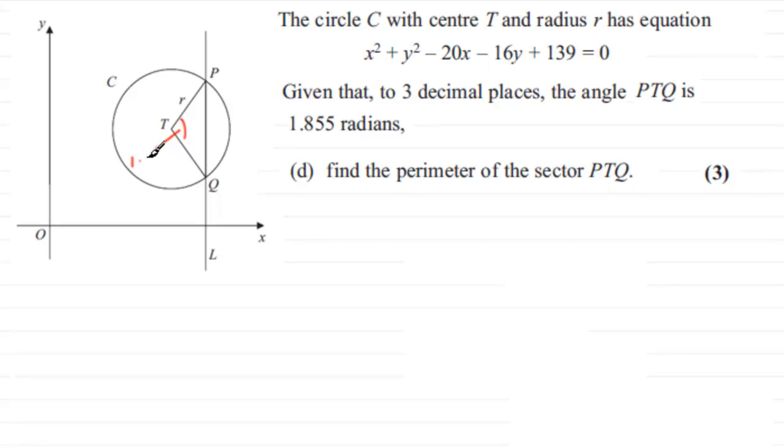We're asked to find the perimeter of the sector PTQ—that's this distance all the way around here. In the previous part of the question we found out that the radius was 5 units. If you'd like to have a go at this, just pause the video and come back when ready.